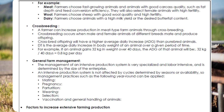Crossbreeding: a farmer can increase production in meat-type farm animals through crossbreeding, which occurs when male and female animals of different breeds mate and produce offspring. Crossbred offspring will have a higher average daily gain (ADG) than purebred animals. ADG is the average daily increase in body weight of an animal over a given period of time. For example, if an animal gains 32 kg in weight over 40 days, the ADG of that animal will be 32 kg ÷ 40 days = 0.8 kg per day.